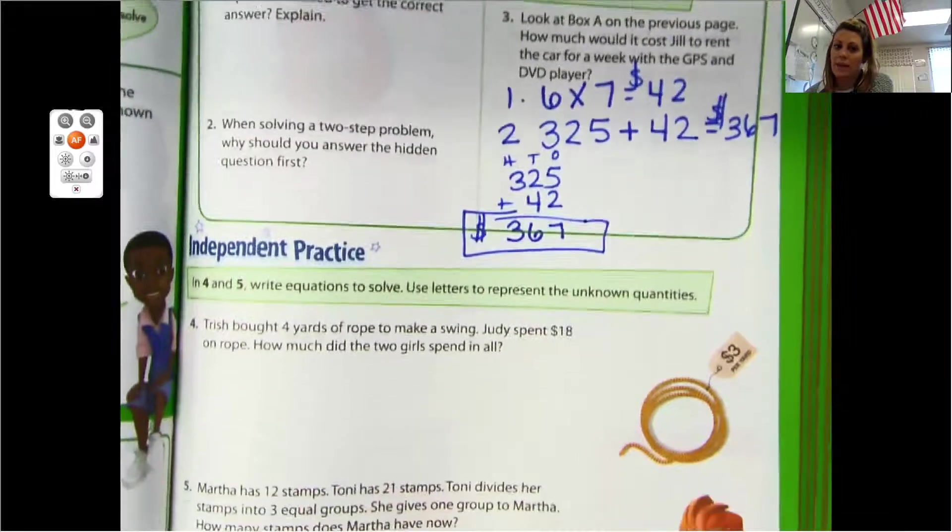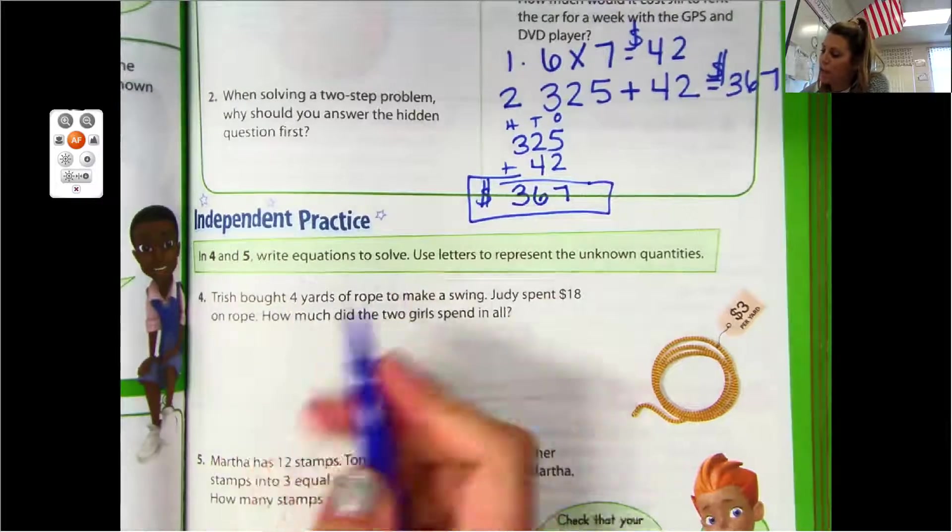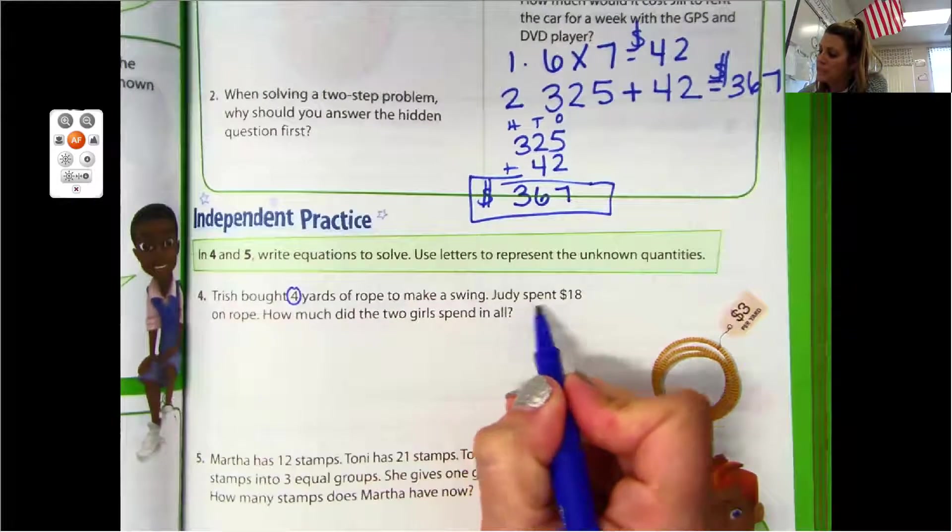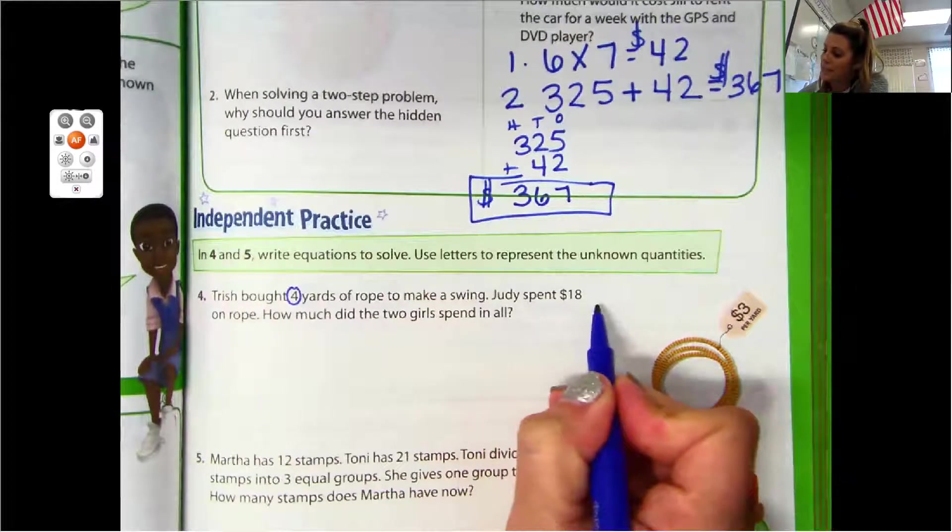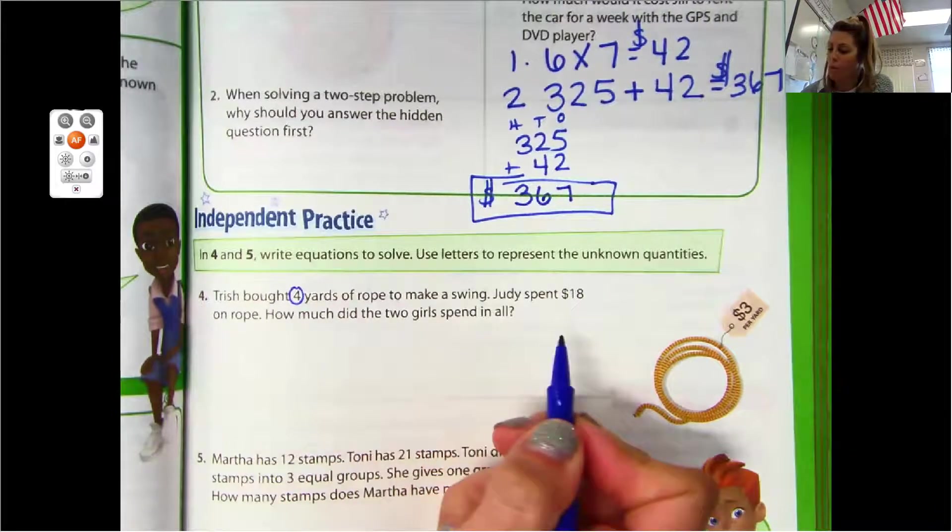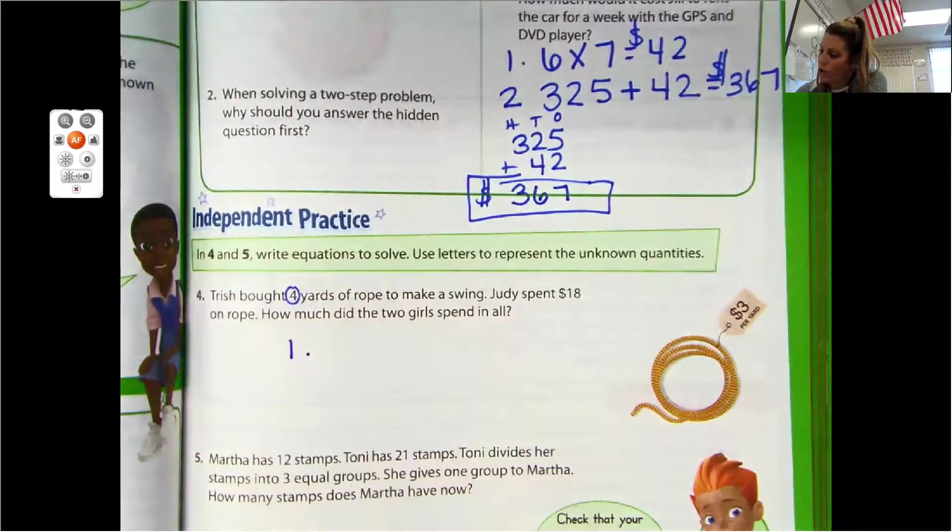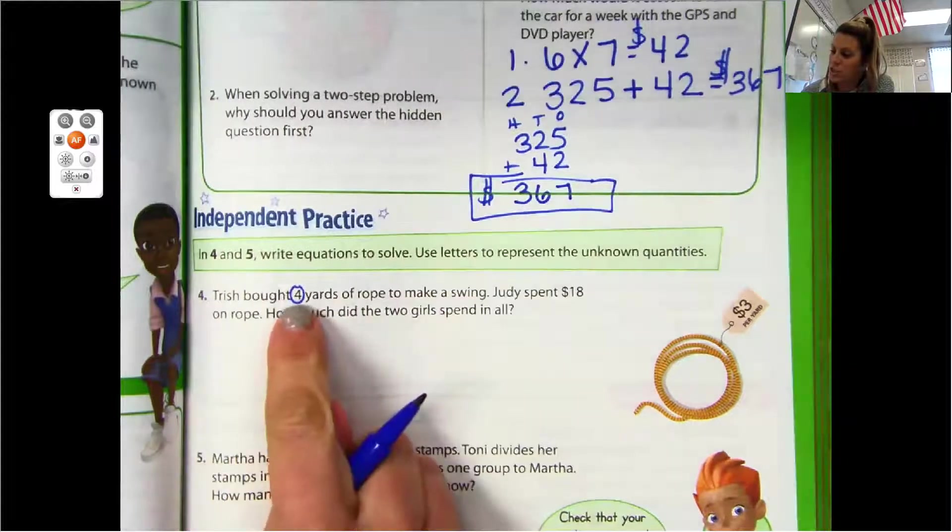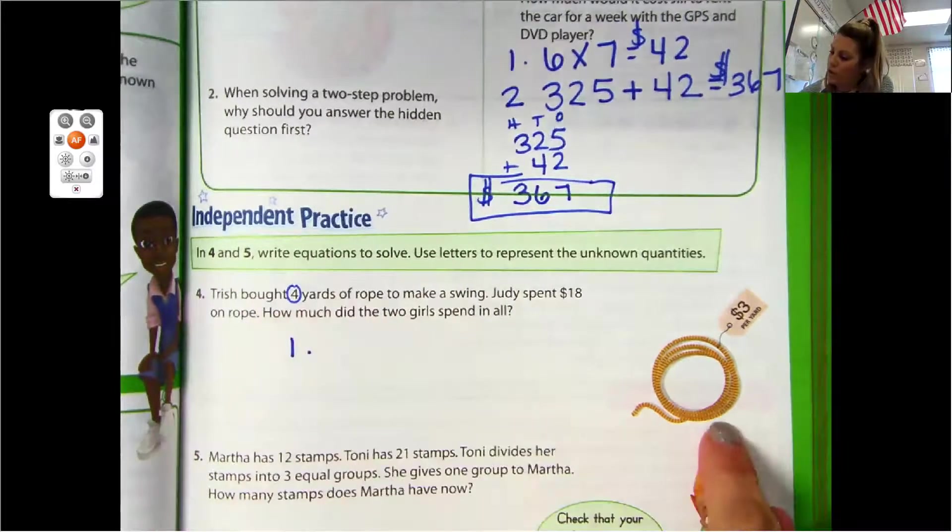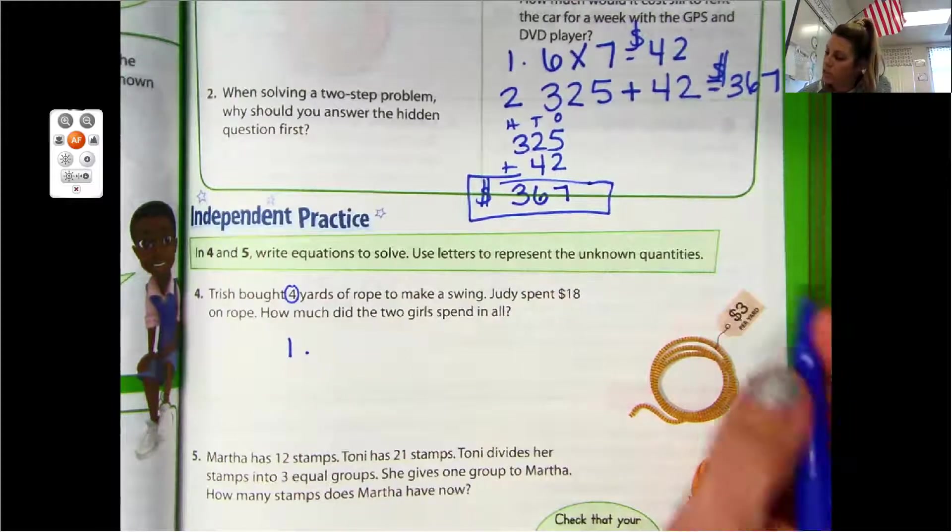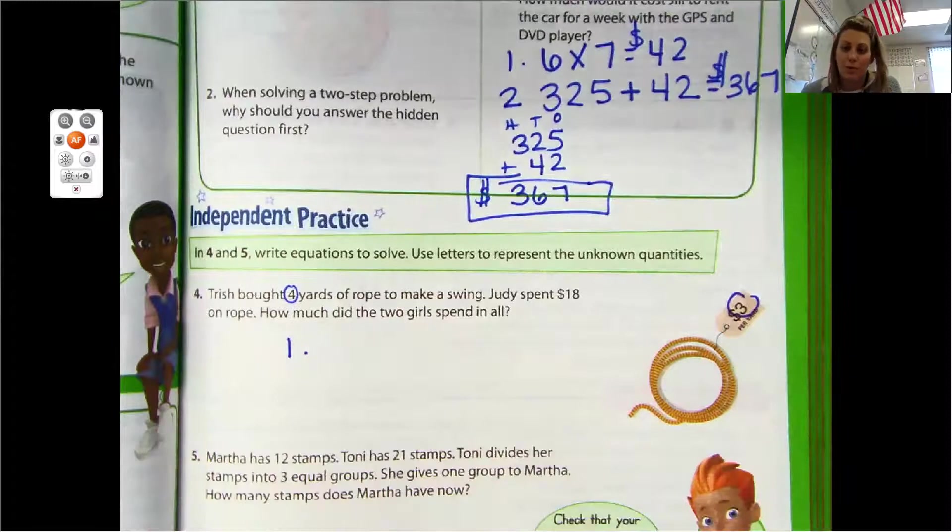Let's look at number four. Trish bought four yards of rope to make a swing. Judy spent $18 on rope. How much did the two girls spend in all? We need to figure out first how much Trish spent. It just tells us she bought four yards of rope. If we look over here, each yard of rope costs $3.